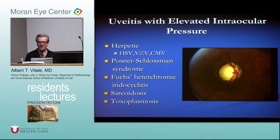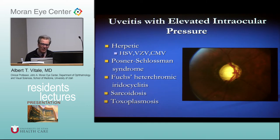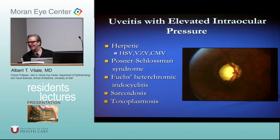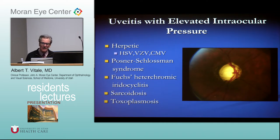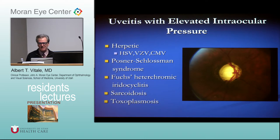Uveitis with elevated intraocular pressure — herpes is number one, two, and three. Then the more unusual entity, Posner-Schlossman syndrome, which is also thought to be due to herpes, specifically CMV. Fuchs heterochromic iridocyclitis is a more indolent inflammation associated with very low-grade uveitis and elevated intraocular pressure, followed by sarcoid and toxoplasmosis.